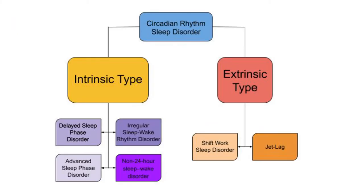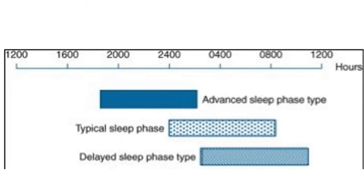There are circadian rhythm sleep disorders of two types: intrinsic and extrinsic. Intrinsic types include delayed sleep phase disorder, advanced sleep phase disorder, irregular sleep-wake rhythm disorder, and non-24-hour sleep-wake disorder. Extrinsic types include shift work sleep disorder and jet lag.